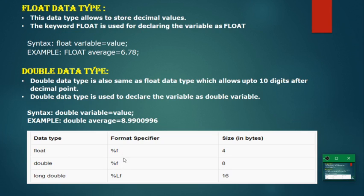For float and double, the common format specifier is '%f', but for long double we use '%lf'. The size for float is 4 bytes, for double is 8 bytes, and for long double is 16 bytes.